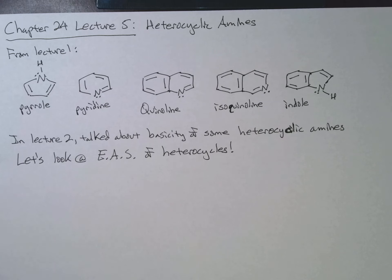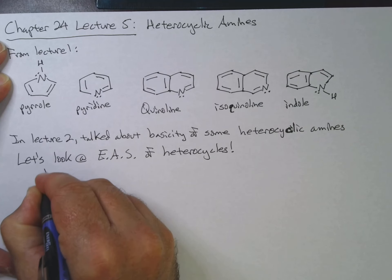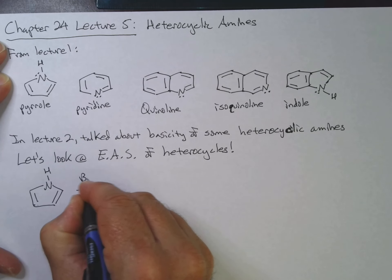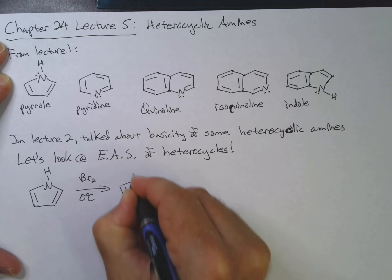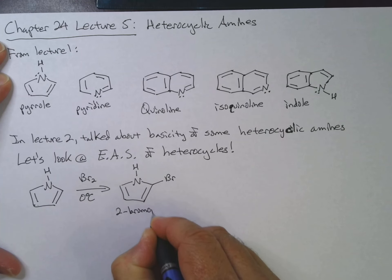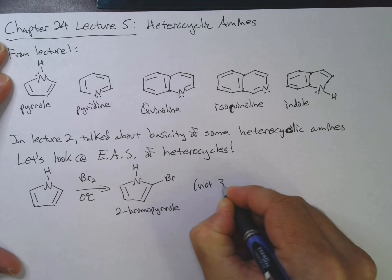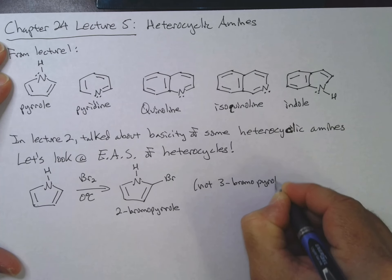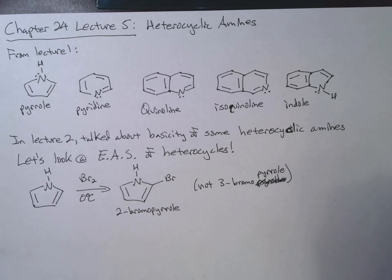Alright, so we see some interesting things here. So for example, we could have pyrrole, and we can treat this with bromine, and actually it's done at low temperature here, and we will get two bromo pyrrole. We don't get three bromo pyrrole. And we'll look at that in just a minute, as far as the mechanism is concerned.